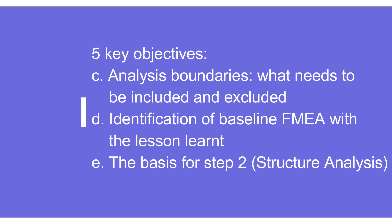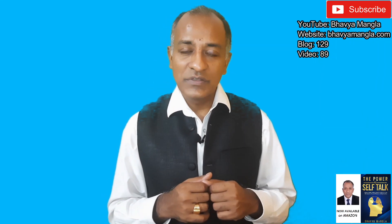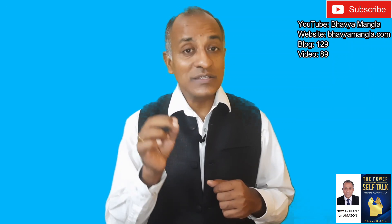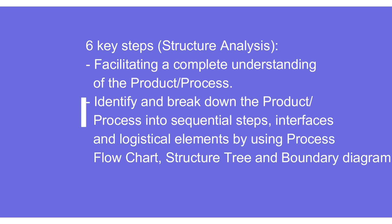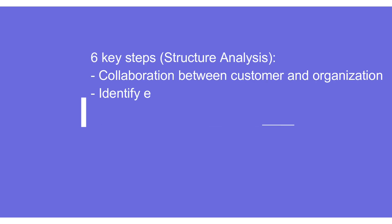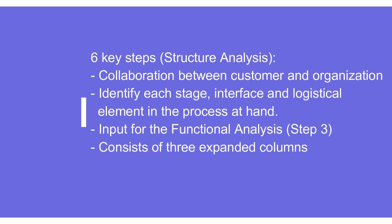Once step one is clear, it becomes a very good basis for step two: structure analysis. There are six key objectives specified in the FMEA handbook. The first is facilitating a complete understanding of the product and process. It also covers how we can identify and break down the product and process into different sequences using process flow charts, structure trees, and boundary diagrams. Good communication and collaboration between customer and organization is also important.